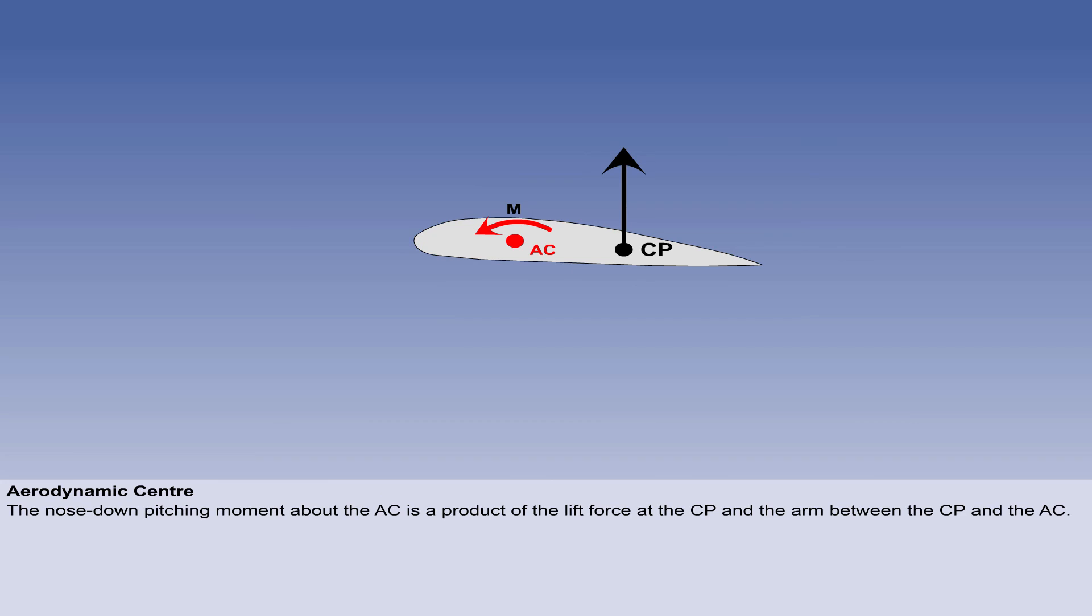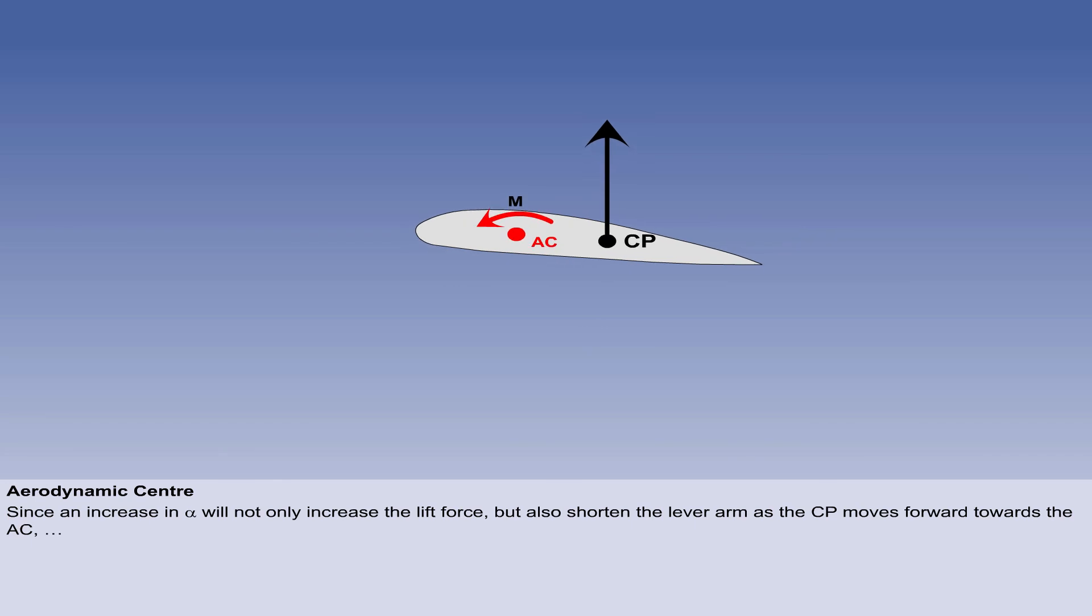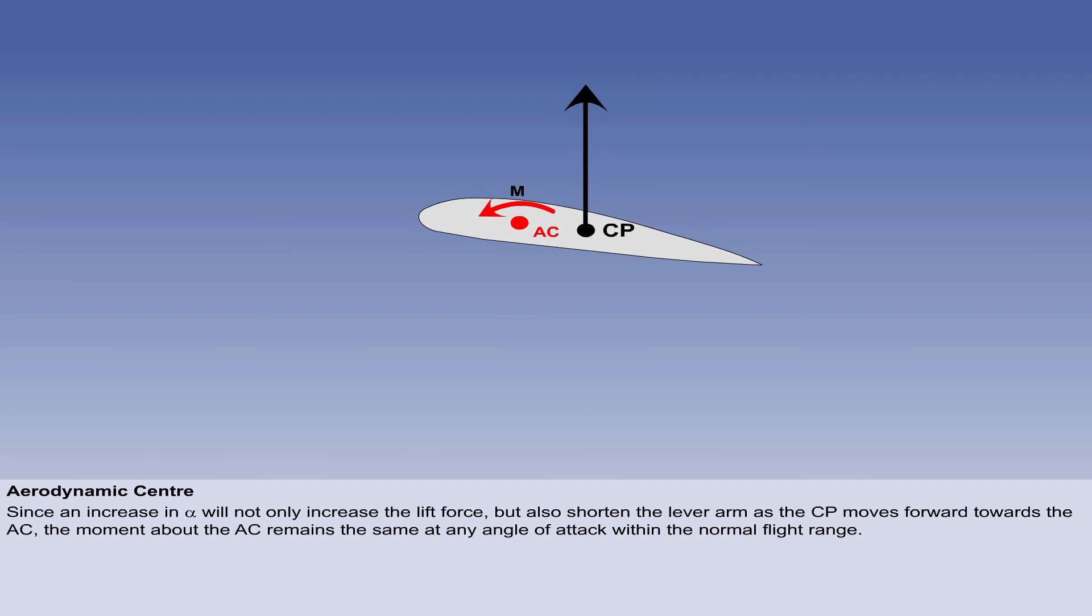There is a nose-down pitching moment about the AC, which is a product of the lift force at the CP, and the arm between the CP and the AC. Since an increase in alpha will not only increase the lift force, but also shorten the lever arm as the CP moves forward towards the AC, the moment about the AC remains the same at any angle of attack within the normal flight range.